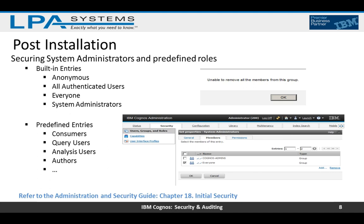During content store initialization, a set of built-in and predefined security objects are created. The security policies initially grant unrestricted access to all objects for all users, so we need to secure this post-installation. One way to do that is to add trusted users or groups as members to the System Administrators role, then remove the Everyone group. We need to do the same for other predefined entries like Consumers, Query Users, Analysis Users, and so on.